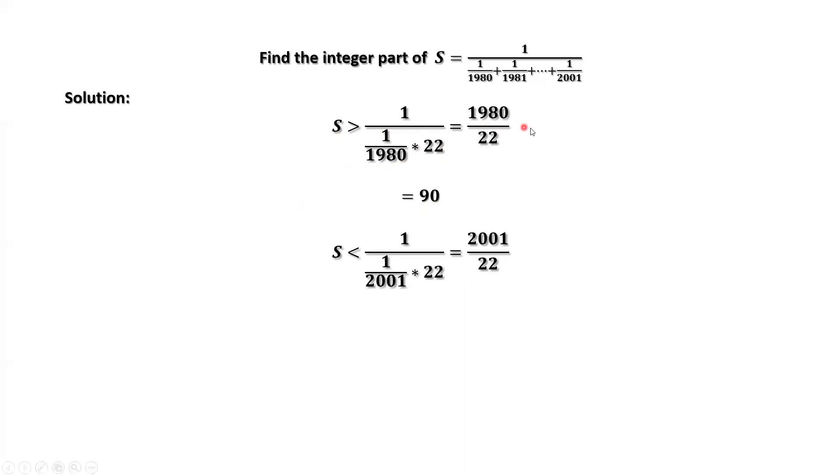We use the smallest term, the last one, 1 over 2001. Replace every term by 1 over 2001. Here, 22 is the total number of terms from the denominator of S.